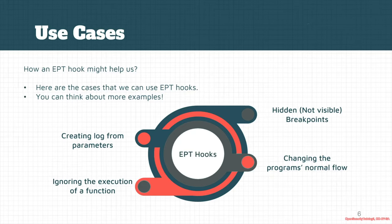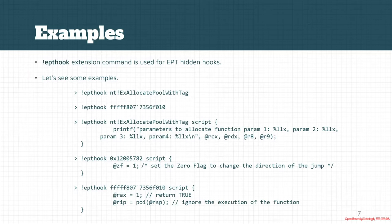Another thing is that with a simple script you can change the program's normal execution flow and completely redirect execution in a new direction. You can also ignore the execution of a function entirely — simply bypass everything so the function is never executed, and the application won't be notified that the target function was ignored. You apply EPT hooks using the `!epthook` extension command. EPT hooks are implemented in the EPT — the Extended Page Table — of Intel processors, which is the hypervisor mechanism used for handling page tables at the hypervisor level.